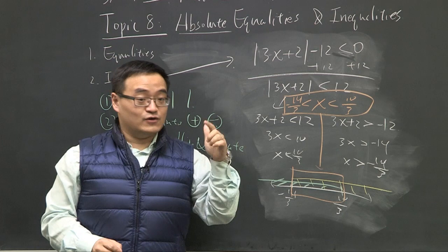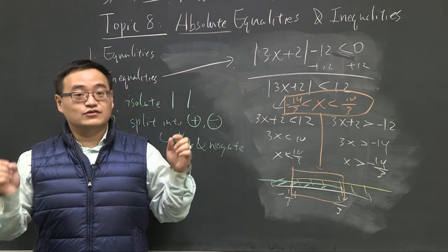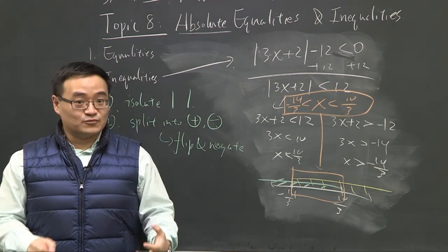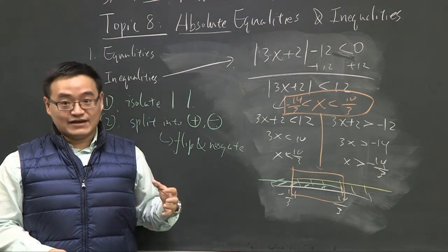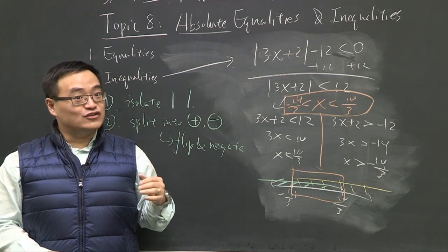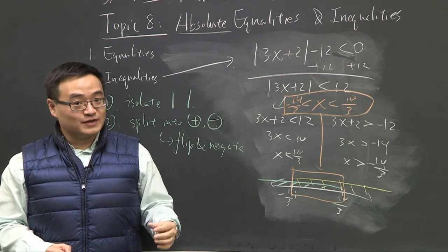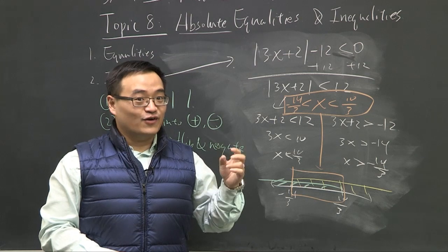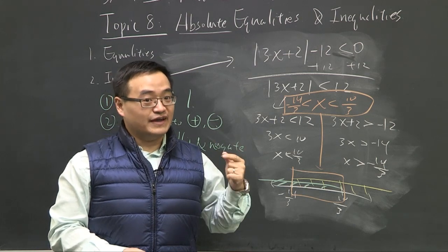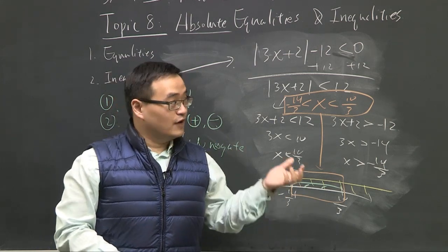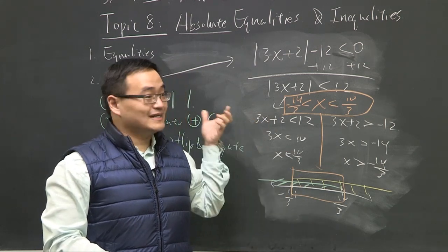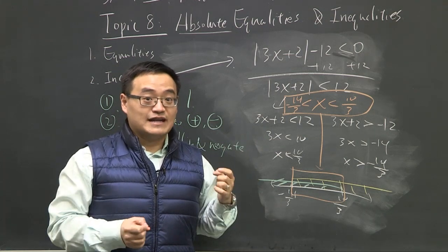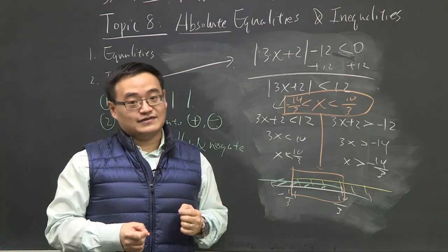Remember: two steps — isolate the absolute value, split into plus and minus, and you're done. It doesn't matter if it's equality or inequality; you use the same method, the same exact way. If you go by that, you won't make mistakes and will always get the right answer. Think before you do these problems: if you get an absolute value equal to a negative, that's impossible, so keep that in mind when taking the test.